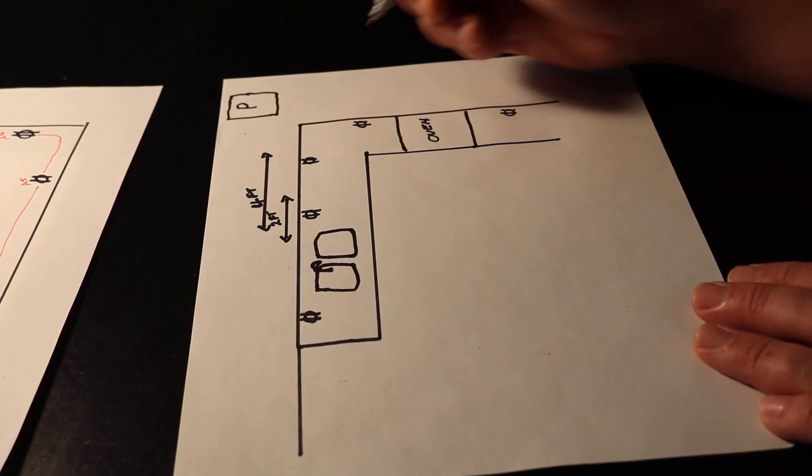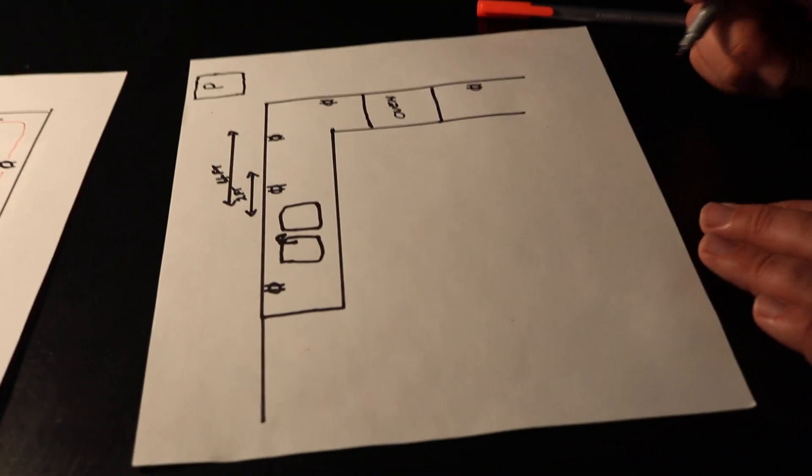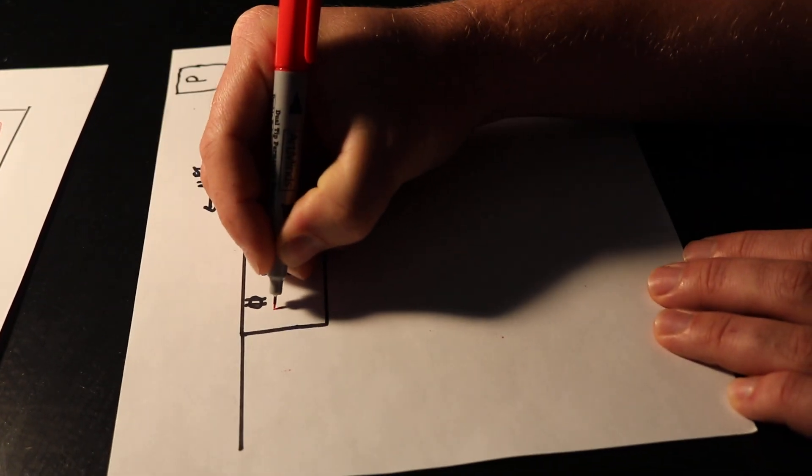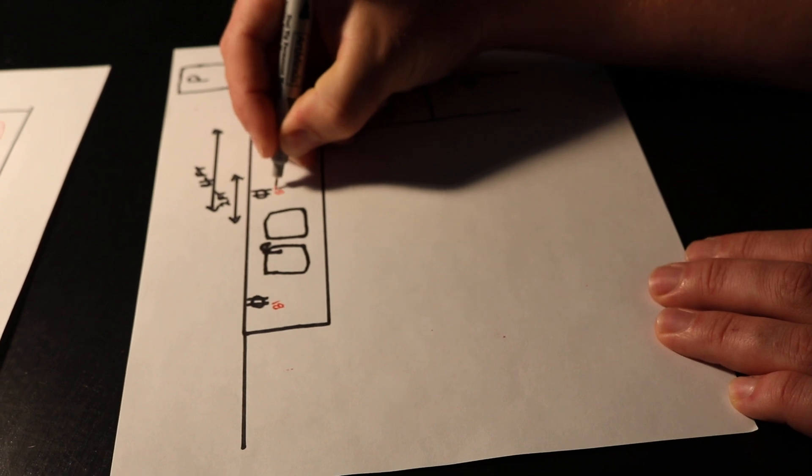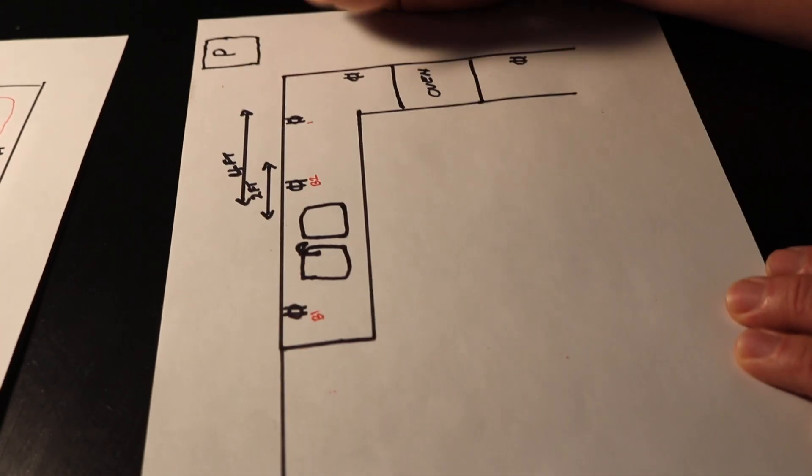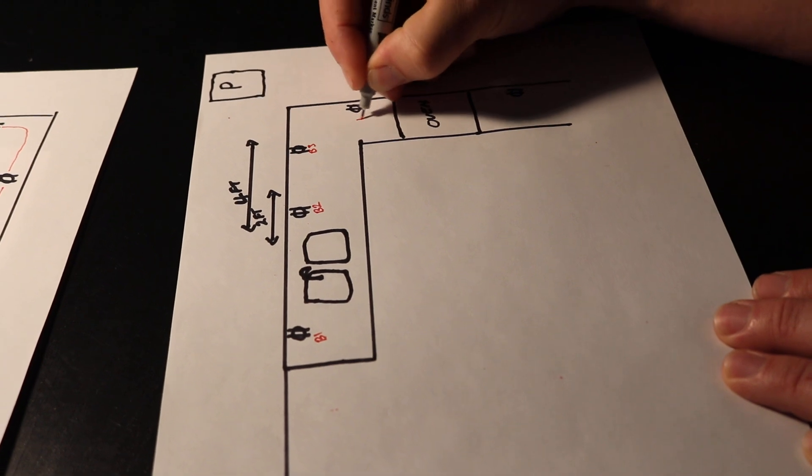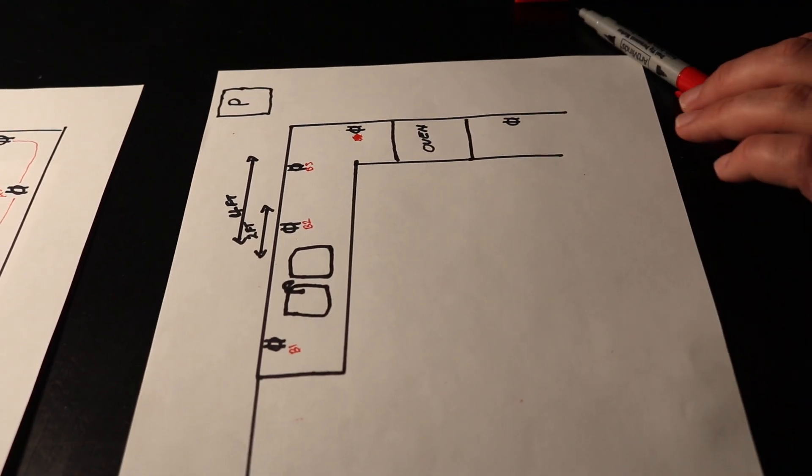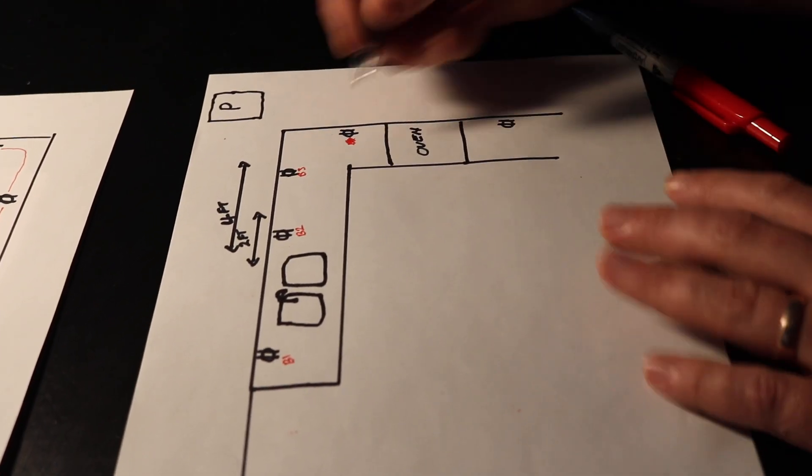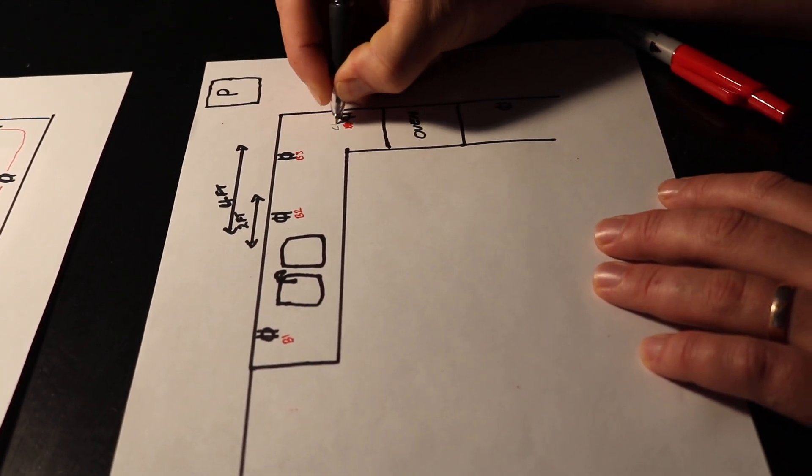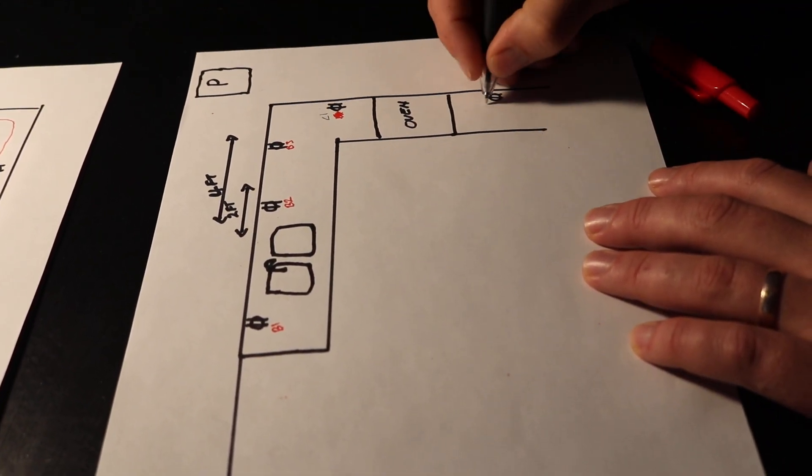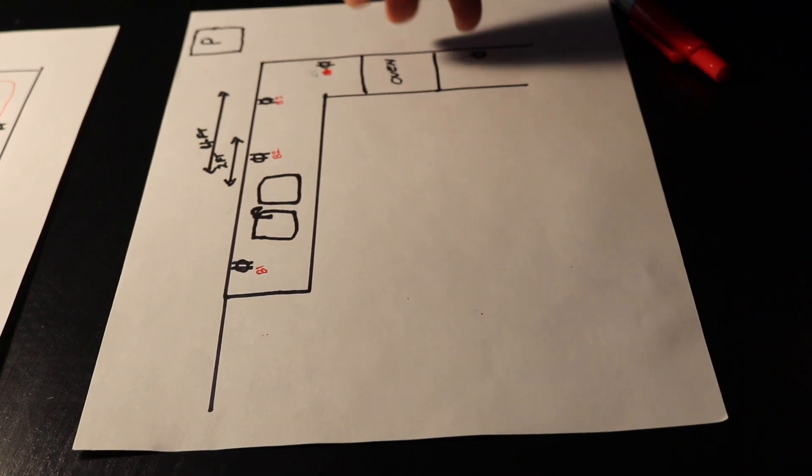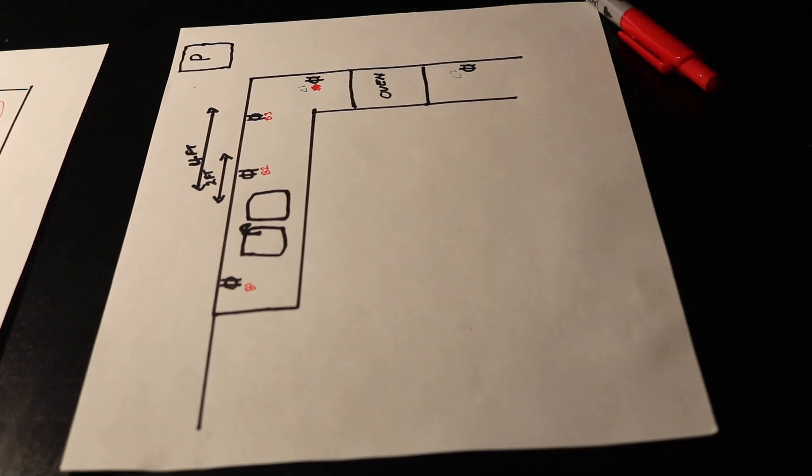You're going to be required to have two small appliance circuits where the way I would lay this out would be, this would be B1, B2, B3, B4. Oh, no, sorry. Let's see the color here. Call this C1 and then C2. So that's two dedicated circuits just for the countertop. It's known as your small appliance.